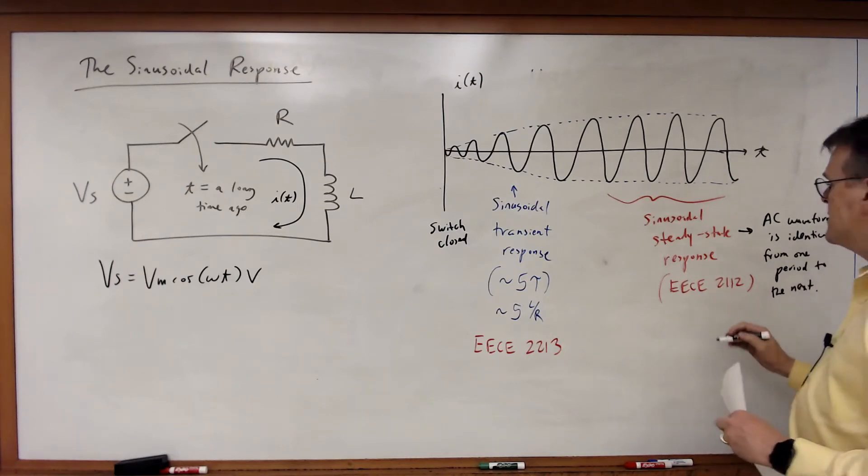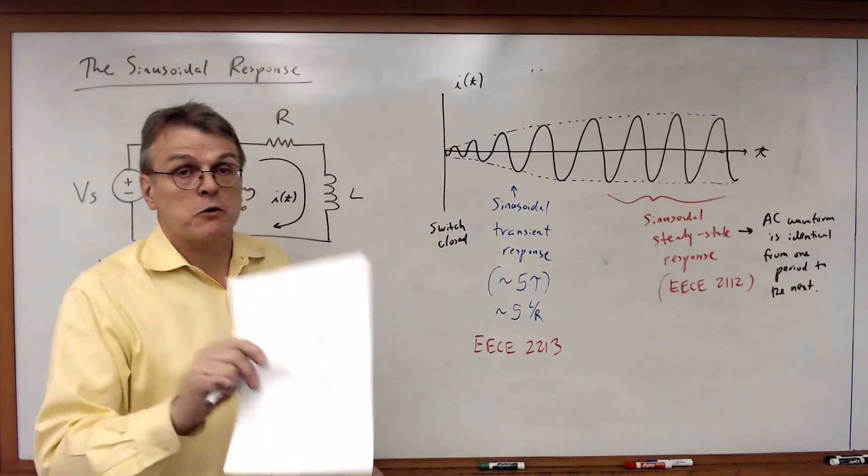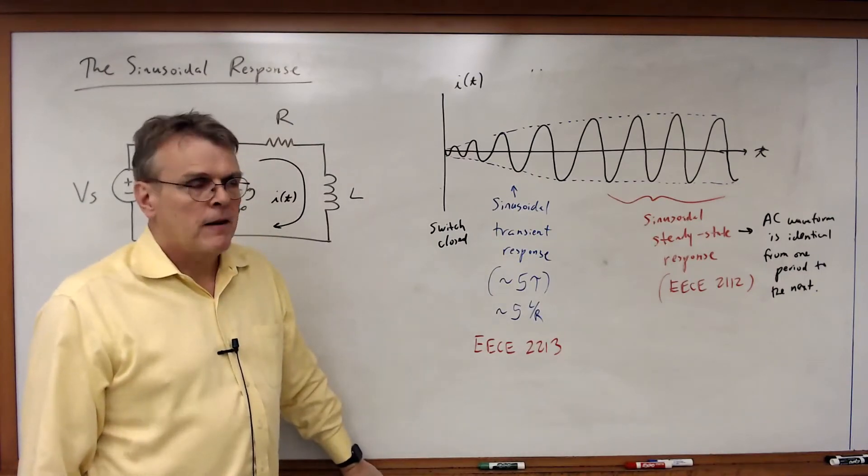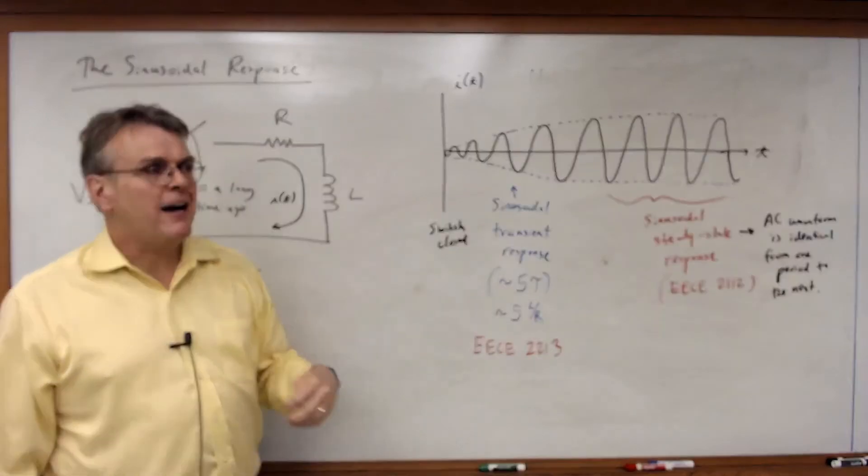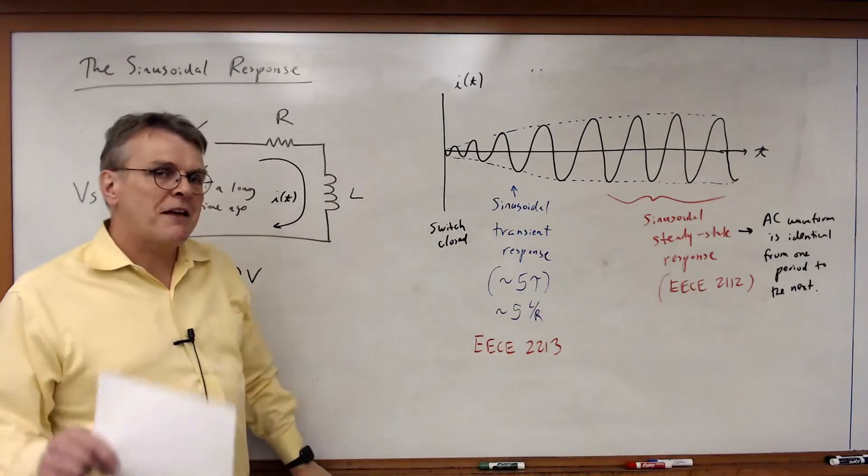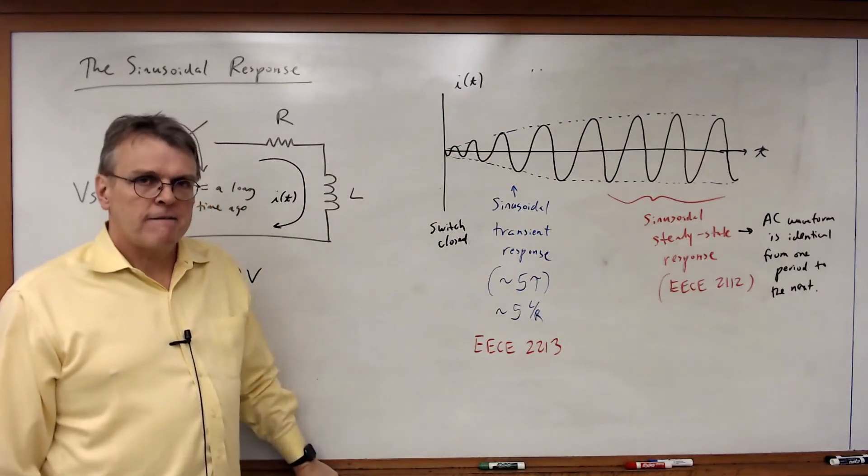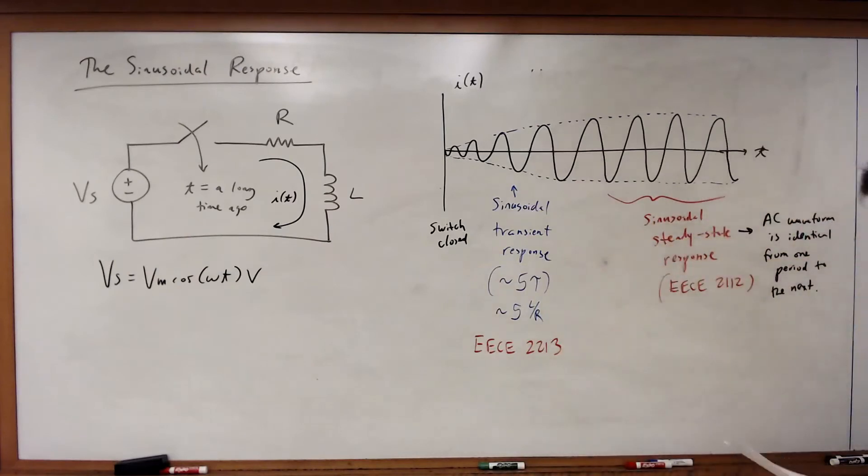Sinusoidal steady state means that the waveform is identical from one period to the next. Now note, this is not the same thing as steady state as we defined for first order circuits. It's a different thing. In this case, obviously the voltage is changing with respect to time, but it simply keeps repeating. And so we call that the sinusoidal steady state. So this is the region we're going to concern ourselves with.